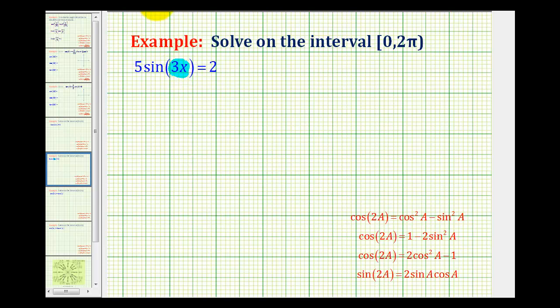So if we take 3x and set it equal to θ, we can solve the equation 5sin(θ) = 2. Then once we determine θ, we can come back and solve for x.